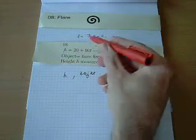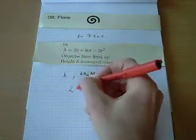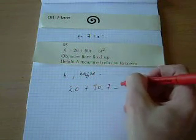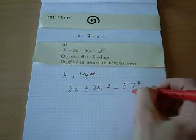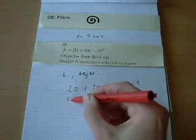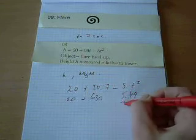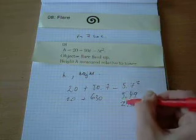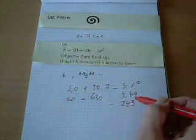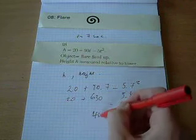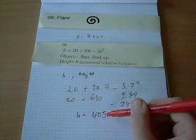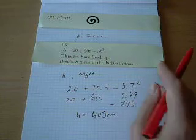Well, what we do is we plug in t equals 7 in here. So what we find is 20 plus 90 times 7 minus 5 times 7 squared. So that's 49 there, that's 630, and that's 20, and that's 245 there. So we add that, or we take away that from 630, and we get 405 at the end. So that is actually the height at which the flare explodes. We haven't had to differentiate anything yet.